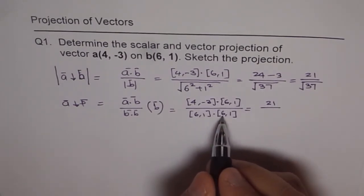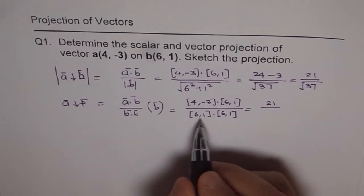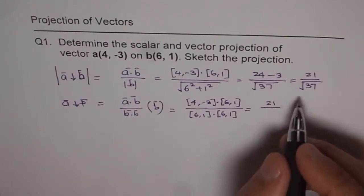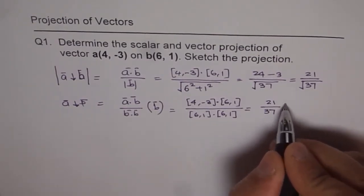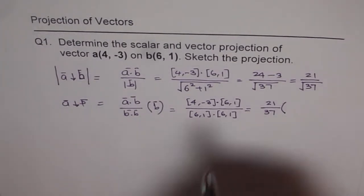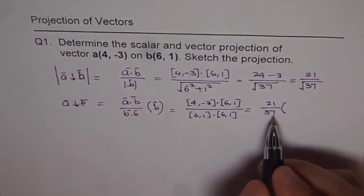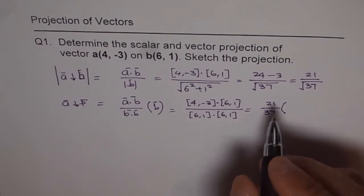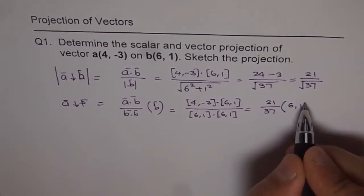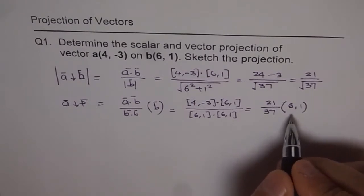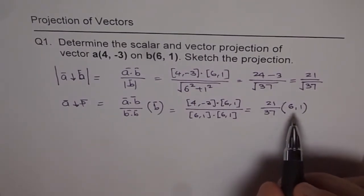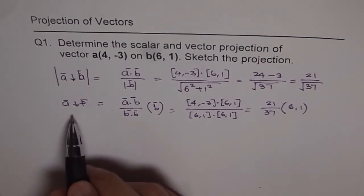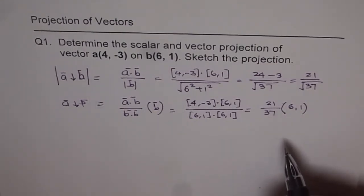You see 6 times 6 is square of 6 which is 36 plus 1, so we get 37 times. So this is a scalar multiple, I'm saying times which is a wrong way of saying, I should say scalar multiple of (6,1). So that gives you the direction. So that is your value for vector projection of A on B.